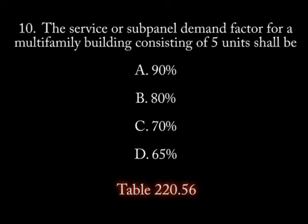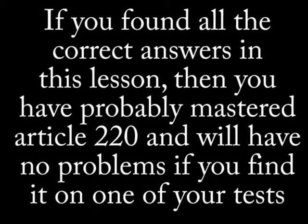Number 10. The service or sub-panel demand factor for a multi-family building consisting of 5 units shall be: A. 90%, B. 80%, C. 70%, D. 65%. That completes my series on article 220.